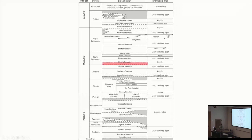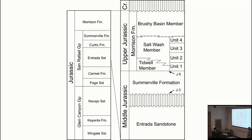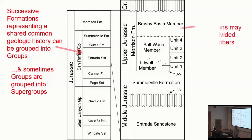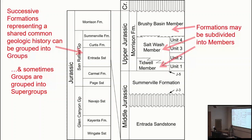A little bit about technical terminology: formations are sometimes grouped into what geologists clearly call groups — multiple formations together representing a larger shared history. Groups can be further grouped into supergroups. On the other direction, a formation can sometimes be subdivided into members, representing slight differences in depositional history. So formation is the basic unit; formations grouped into groups, groups into supergroups; and formations can be subdivided into members.